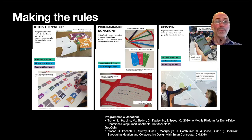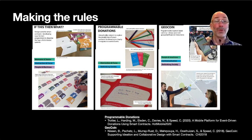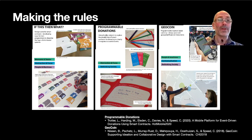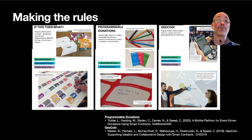In making the rules, we investigate what happens when participants can create their own protocols and contracts. In Geocoin, Programmable Donations, and If This Then What, participation and creativity are drivers for engagement. When people start trying to design systems, it's a chance to think through in detail how the networks would operate. Prototyping a system raises questions about how that system would interact with the rest of one's life, so frictions and problems become more apparent.